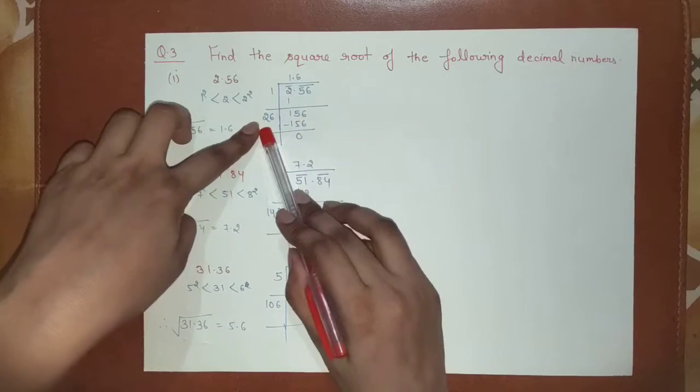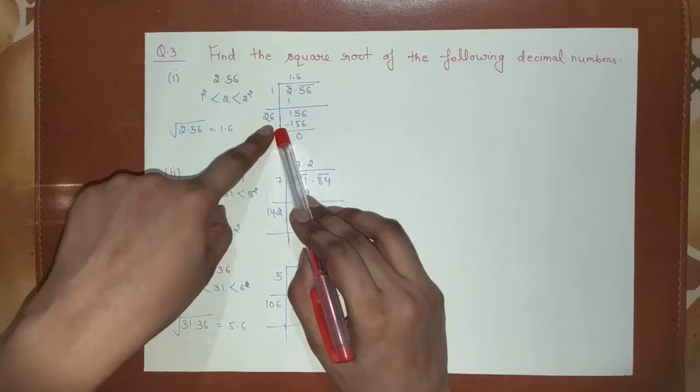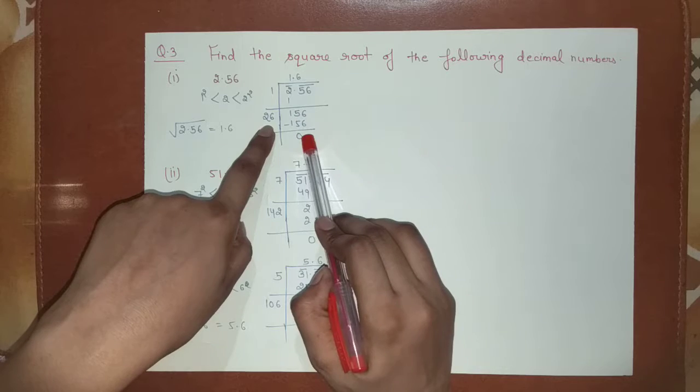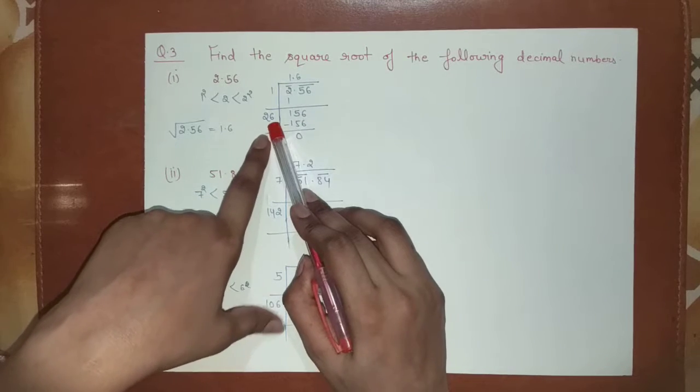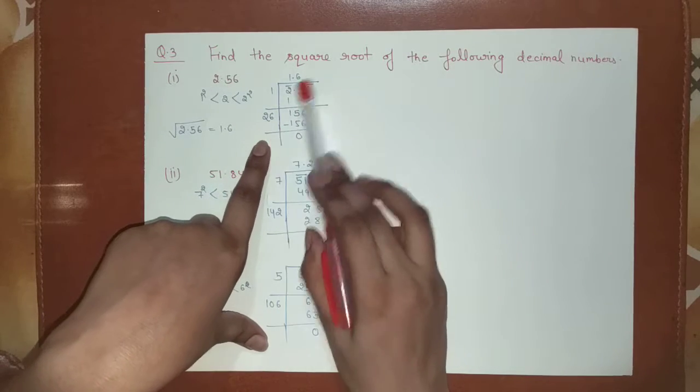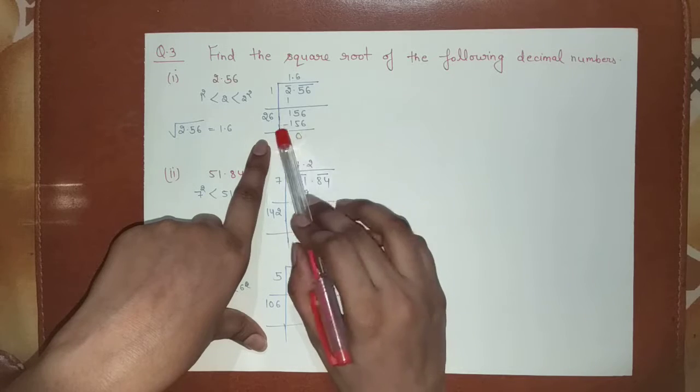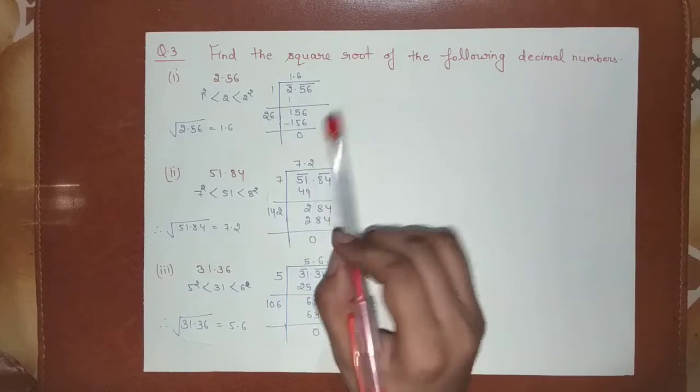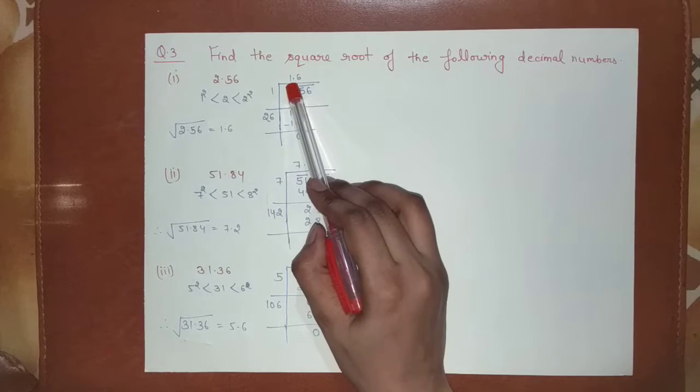2. Whatever we will multiply with 2 in the quotient, and here we get 156. So I took this 6 and I multiplied it with 6 and I have minused it and the remainder is 0, so it means that 1.